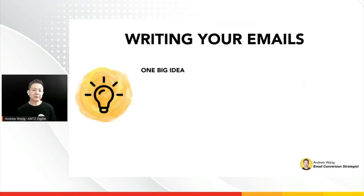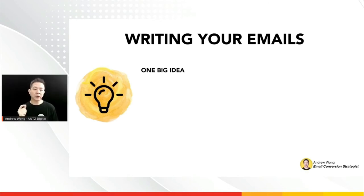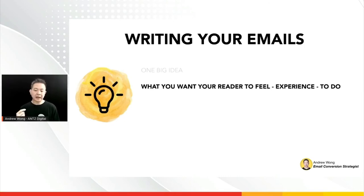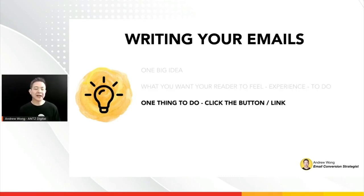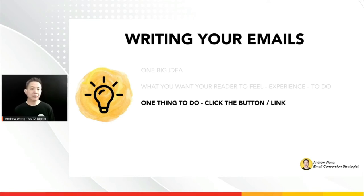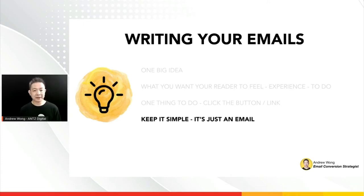Now let's move to writing your emails. The idea is to start with only one big idea. Before you write, you want to know what you want your reader to feel, to experience, or to do. Then the third element is the one thing they need to do — either click a button or a link. It doesn't necessarily lead to a sales page; it could be a YouTube video or a tutorial. Most importantly, keep it simple — Jeffrey mentioned that the trend is moving towards simplicity because there's just too much noise out there.